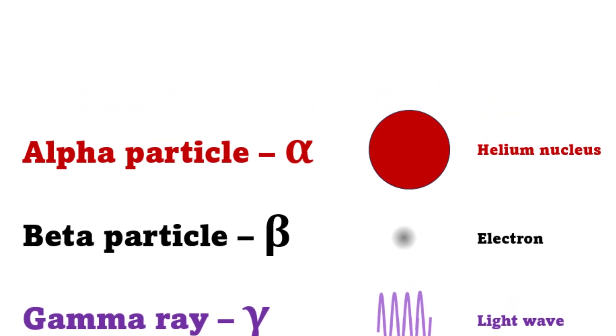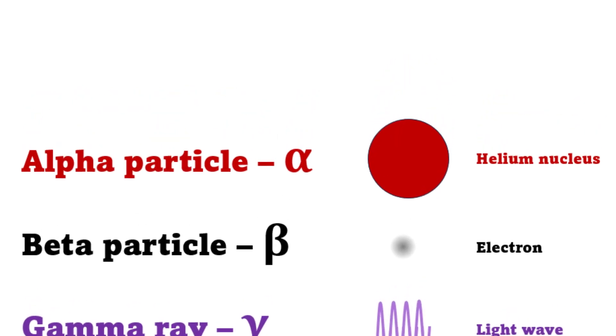Alpha particles seem to behave like a helium atom with a double positive charge. We know it's actually a helium nucleus, but Rutherford hadn't discovered the nucleus yet.